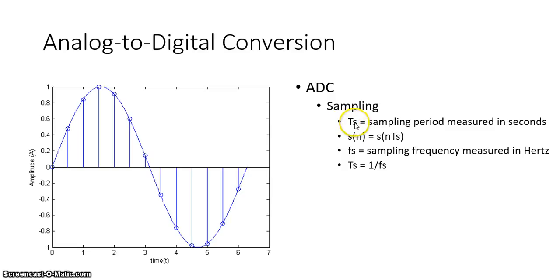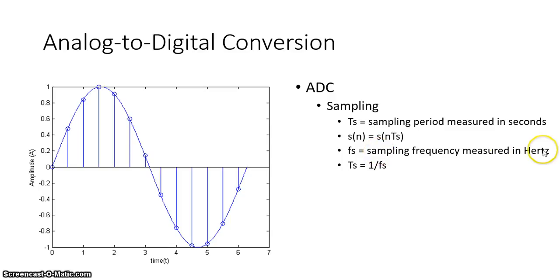We're checking what the value of the analog signal is at each sampled point. T_s is our sampling period, measured in seconds. S(n) denotes the discrete signal, where n is the value of time, which equals n times the sampling period. We also have the sampling frequency — measured in Hertz — which is one over the sampling period (F_s = 1/T_s).